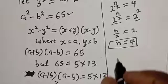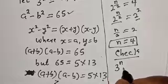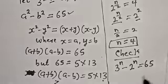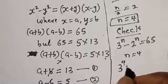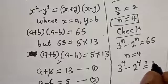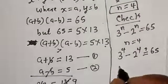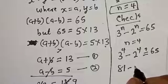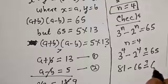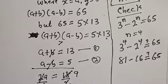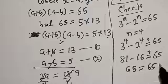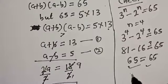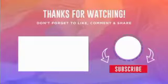Let's check: substituting n equals 4 into the original equation, 3 raised to power 4 minus 2 raised to power 4 must equal 65. We get 81 minus 16, which equals 65. This satisfies the given equation, confirming n equals 4. If you enjoyed the class, please don't forget to like, share, comment and subscribe. Thank you.